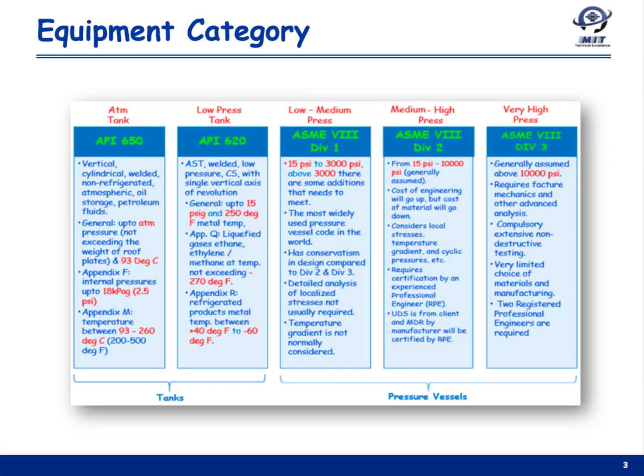This table lists the Section 8 codes and API storage tank standards' applicability based on pressure range. We will mainly discuss pressure applicability in this slide, whereas other features are discussed in the following slides. As we can see, we can segregate code application ranging from atmospheric pressure up to very high pressure range.